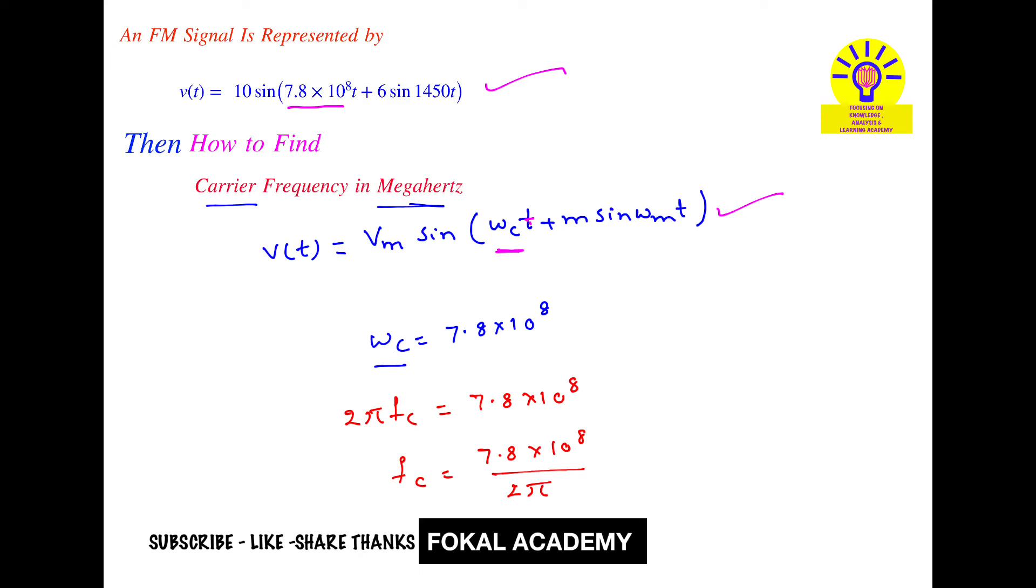So by simplifying this we will get 124.14 megahertz. So this is the required carrier frequency for the given FM signal. And this is the process of simplification.